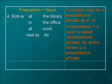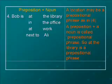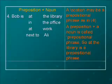So a location can be a prepositional phrase or a single word. Bob is at work — at is a preposition and work is a noun, so at work is a prepositional phrase and a location. Bob is next to Ali — next to is a preposition and Ali is a noun, so next to Ali is a location. All of these — at the library, in the office, at work, next to Ali — are prepositional phrases: preposition plus noun.